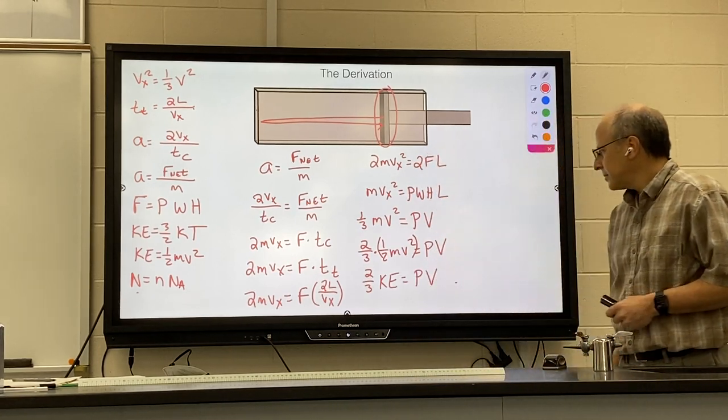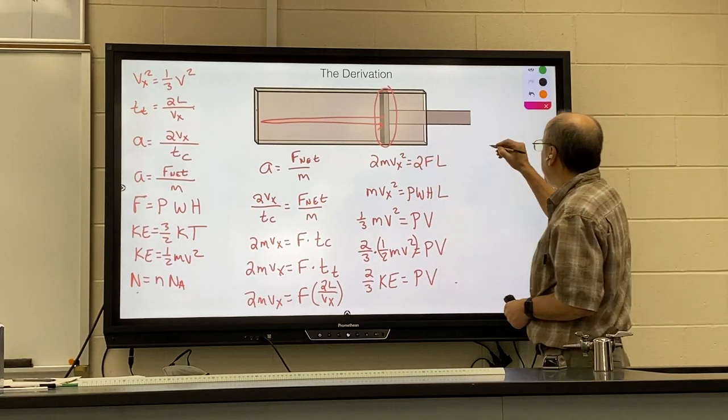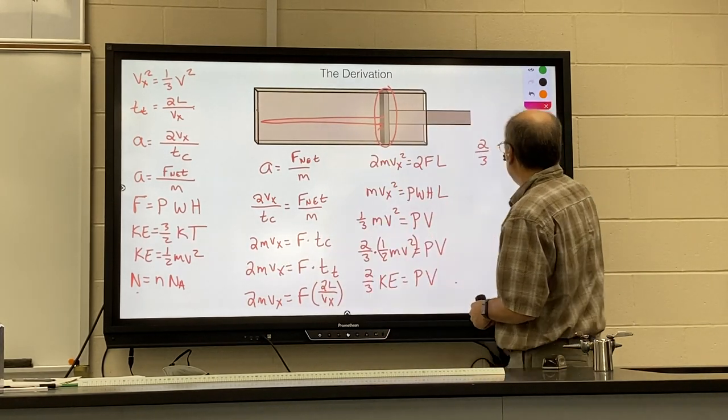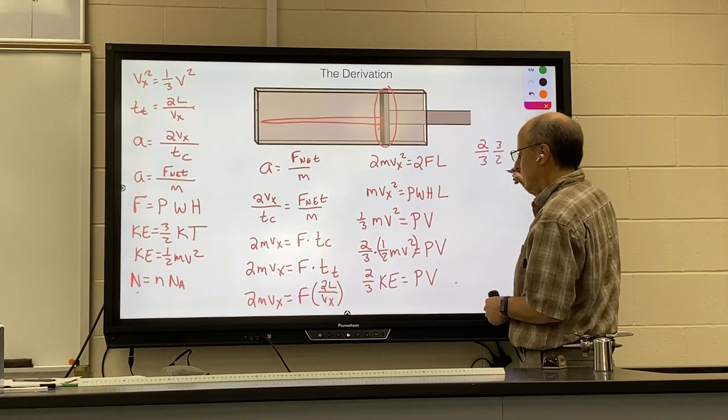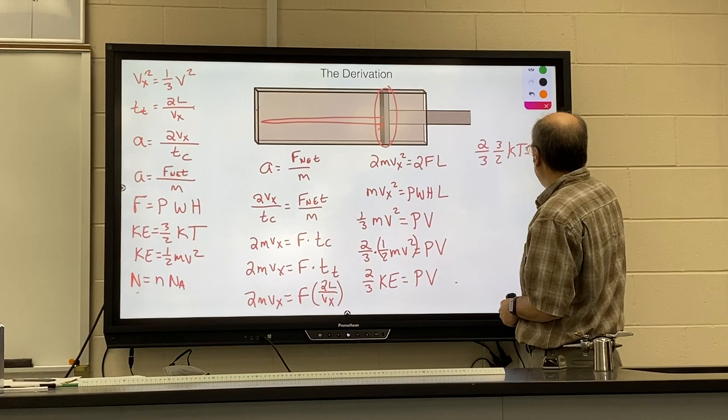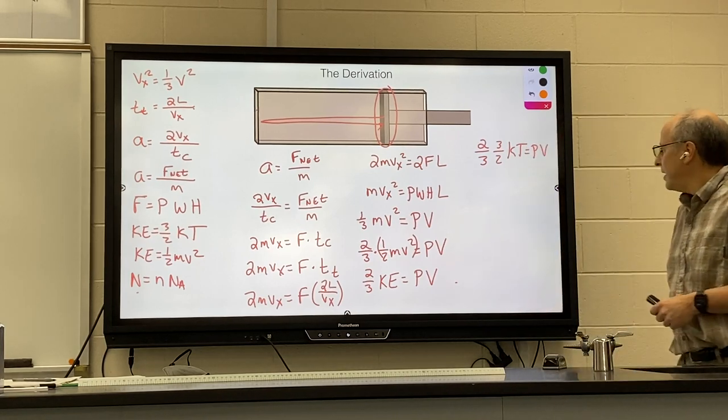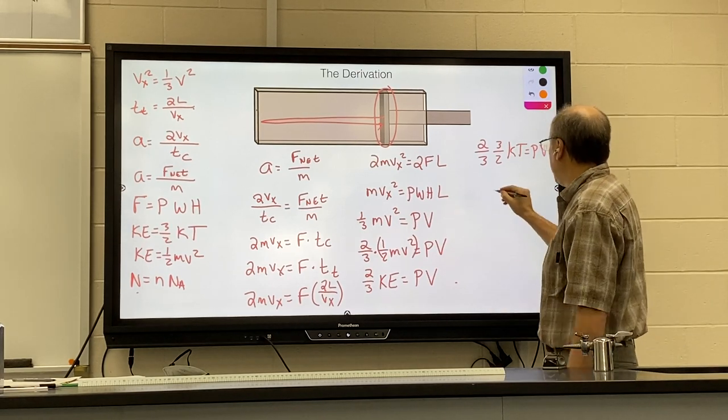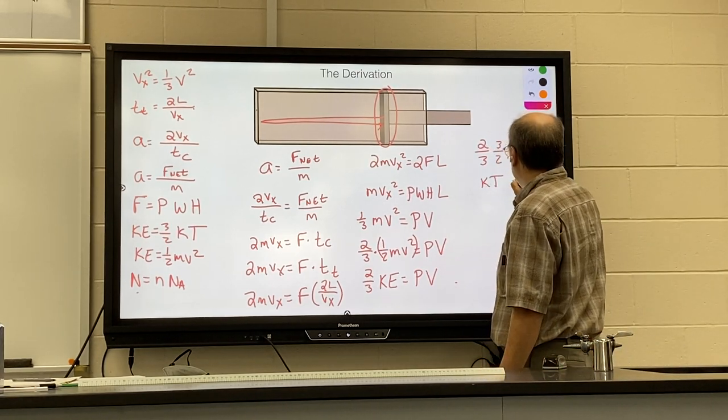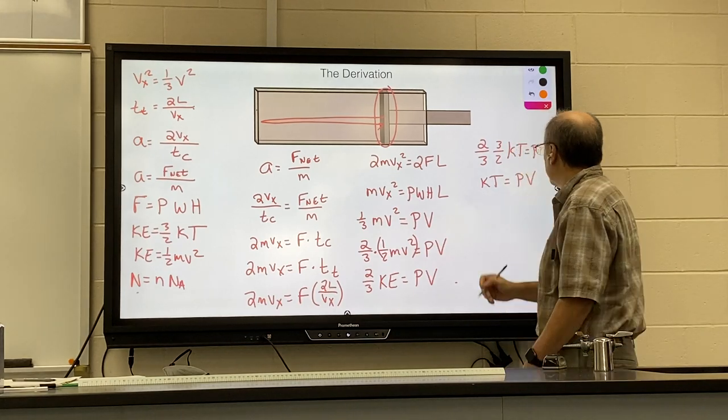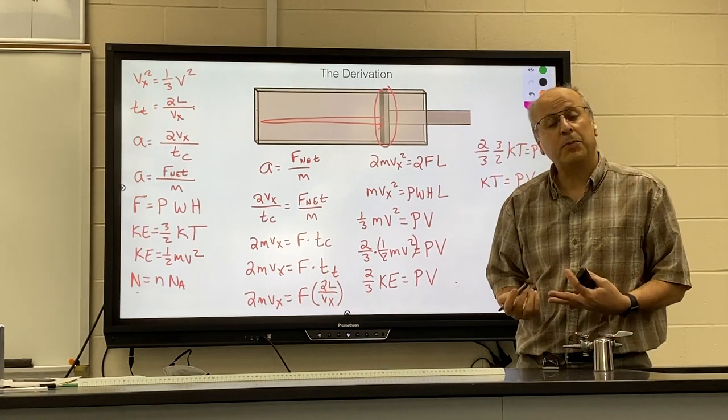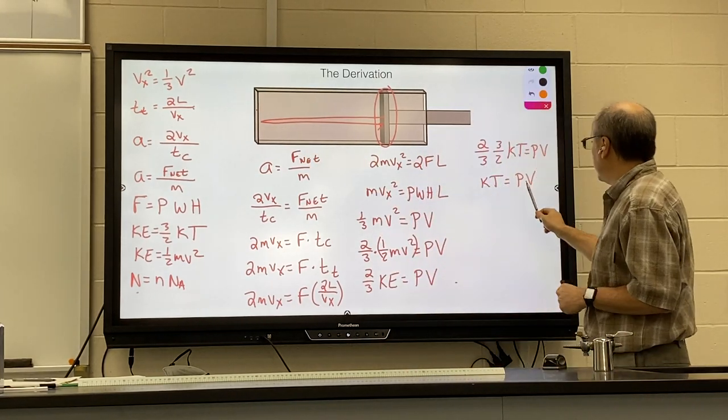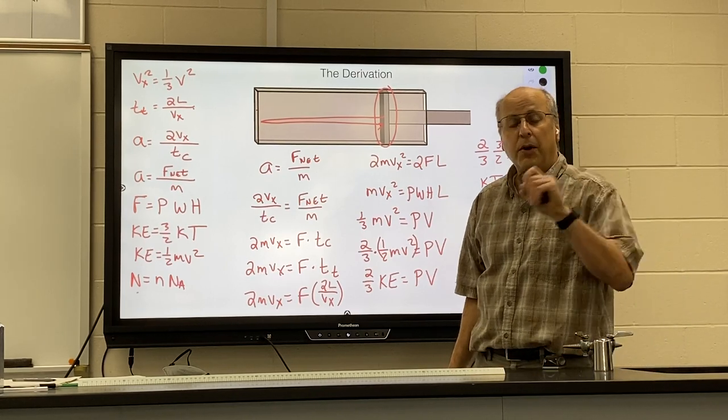Next we can take our kinetic energy for an average particle and put it in place of the kinetic energy, and you can see magically the two thirds and the three halves cancel out, and we get Boltzmann's constant times temperature equals pressure times volume. At this point, it's important to remember that we are looking at only a single particle, so this is the average pressure from a single particle.